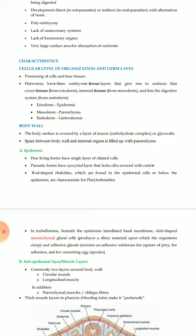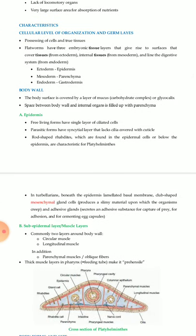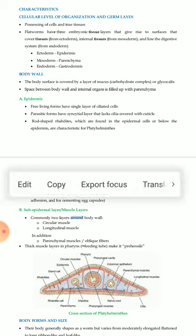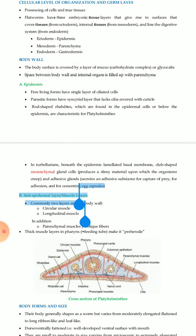Characteristics: cellular level of organization and germ layers — possessing cells and true tissues. Flatworms have three embryonic tissue layers that give rise to surfaces that cover tissues from ectoderm, internal tissues from mesoderm, and lining of the digestive system from endoderm.